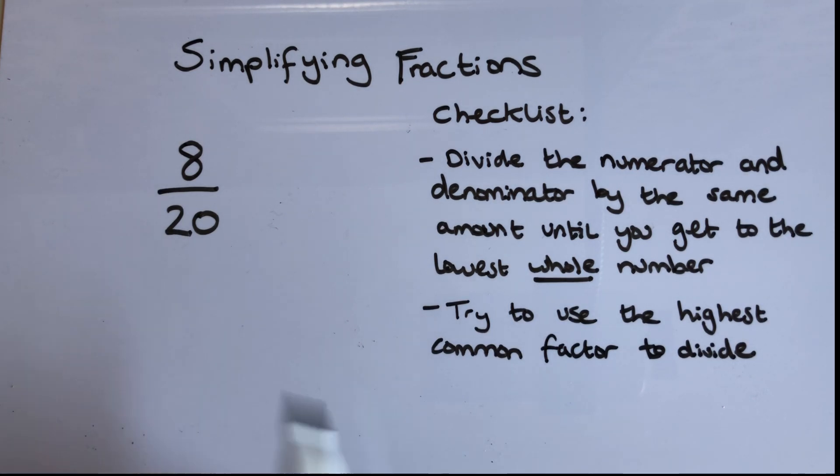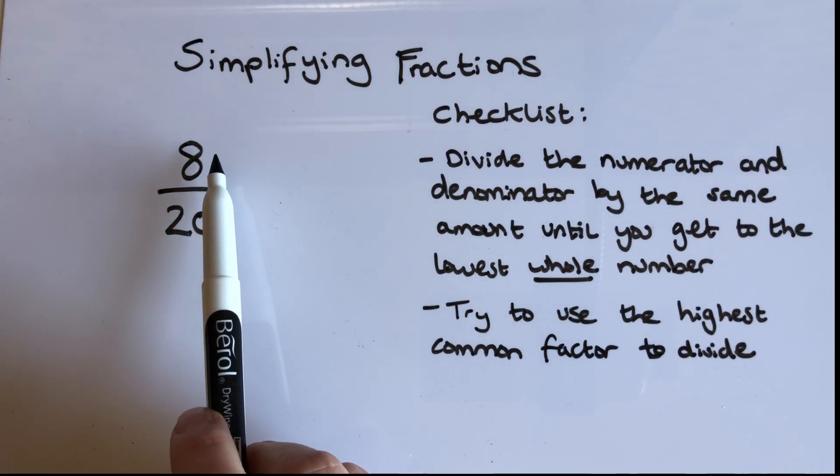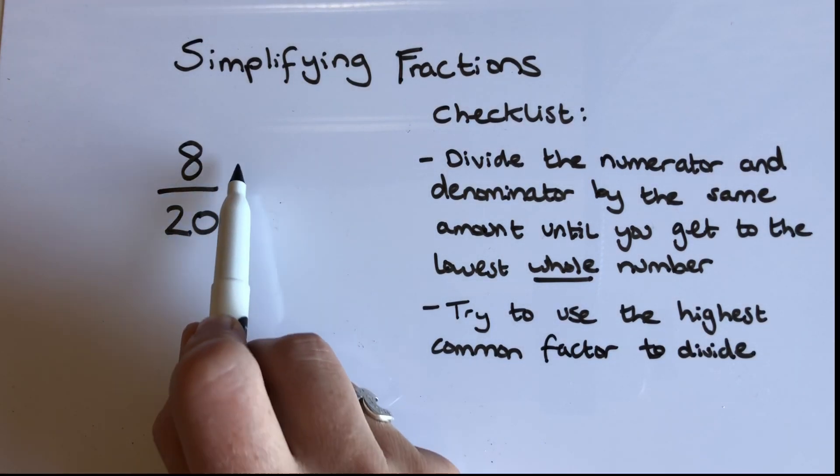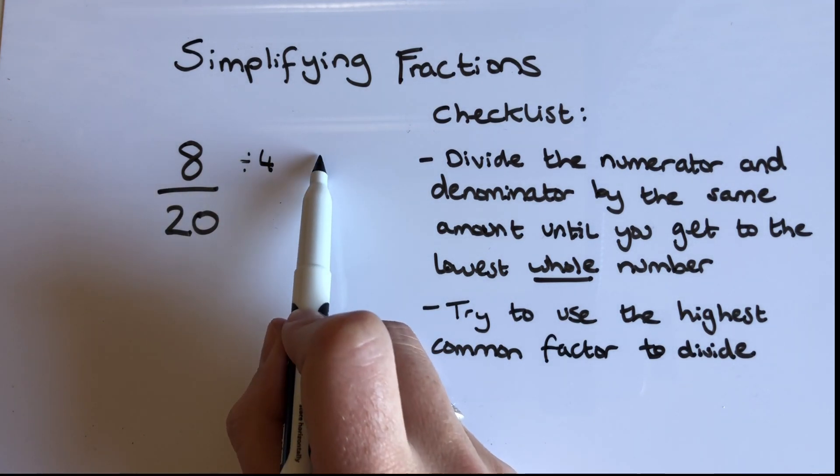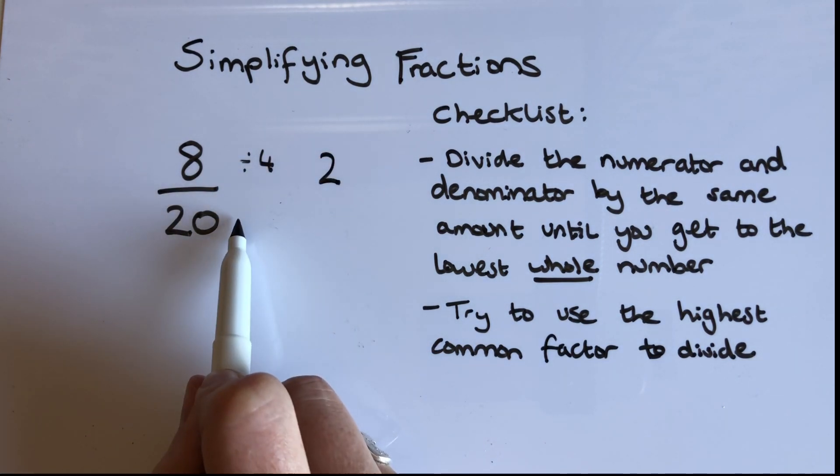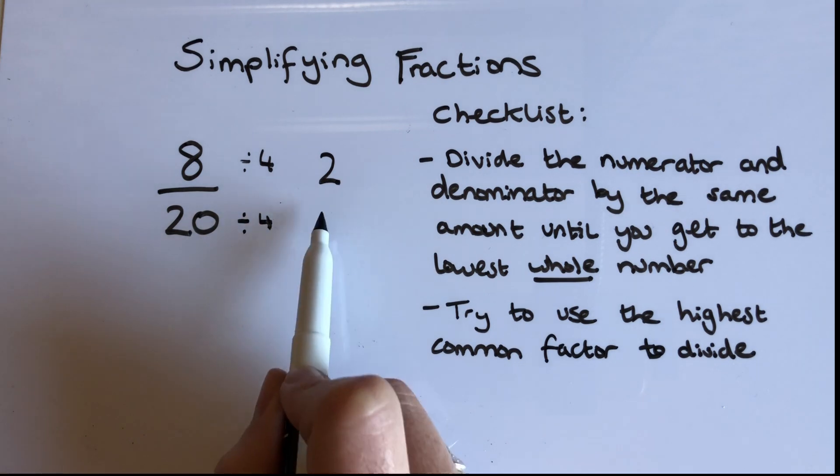So in this example I have to divide 8 by the same number that I divide 20. If I'm going to choose the highest common factor, I would use 4. 8 divided by 4 equals 2. 20 divided by 4 equals 5.